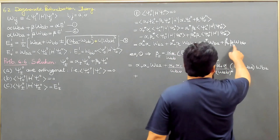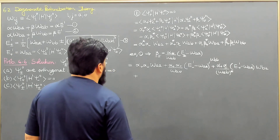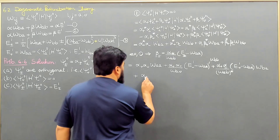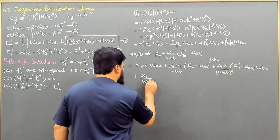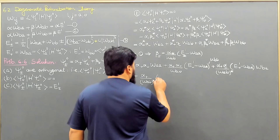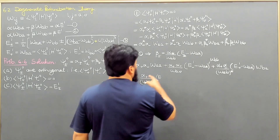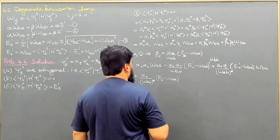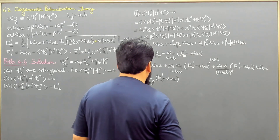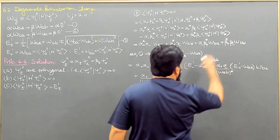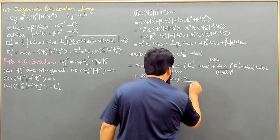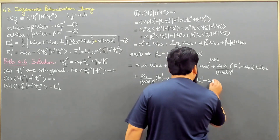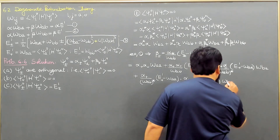Writing β⁺* as α⁺*·W_AB*/(E⁺₁ - W_AA) and β⁻ as α⁻·W_AB/(E⁻₁ - W_AA). After W_AB terms cancel, the β⁺·β⁻ term contributes |W_AB|²·(E⁺₁ - W_AA)⁻¹·(E⁻₁ - W_AA)⁻¹·|W_AB|² to the expression.